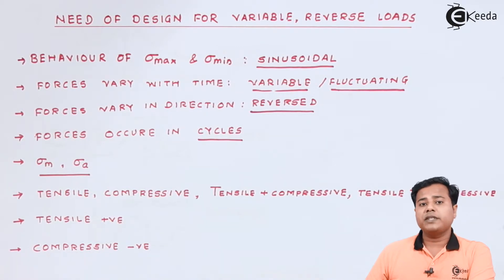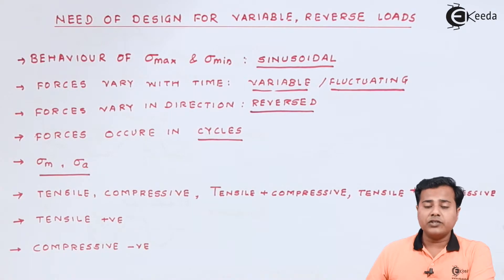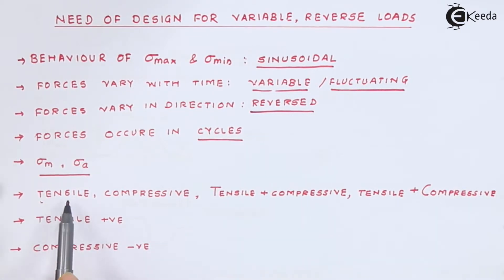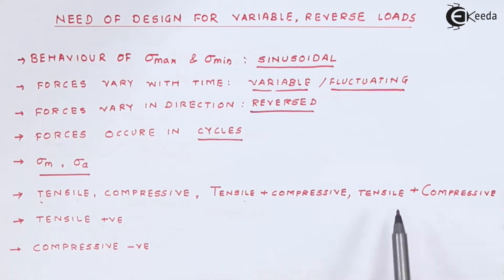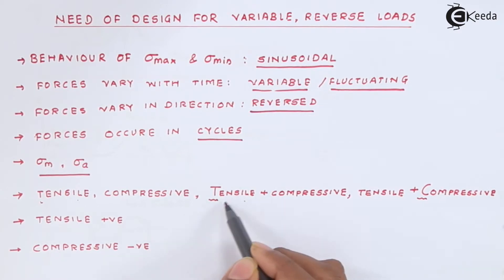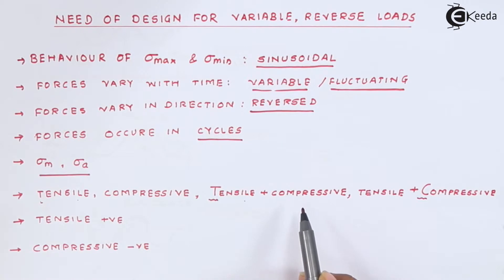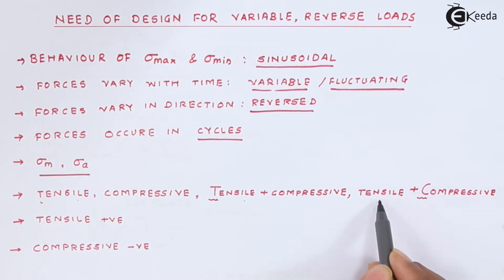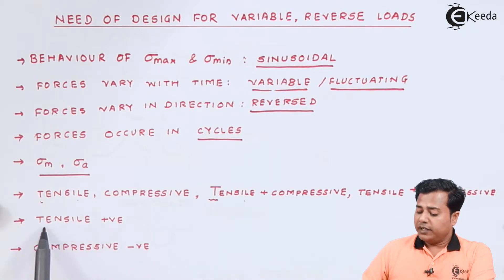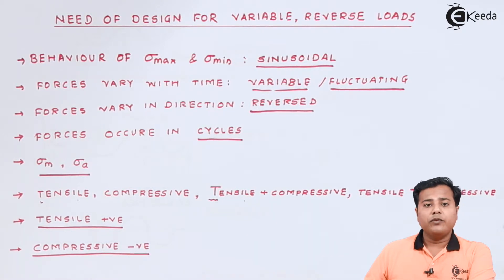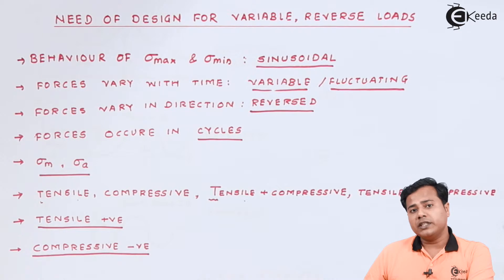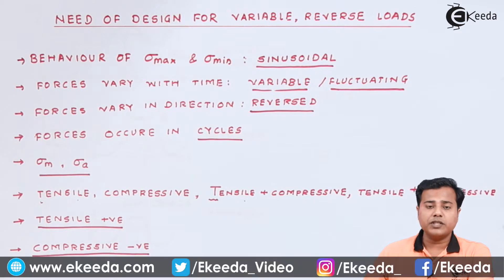Two important aspects are mean stress and amplitude stress, demonstrated using graphical illustration of maximum and minimum stresses compared to static stresses. The nature of stresses may be tensile, compressive, or combined tensile and compressive in different proportions. The sign convention used is: tensile loads are positive and compressive loads are negative — the same convention applies in dynamic analysis.